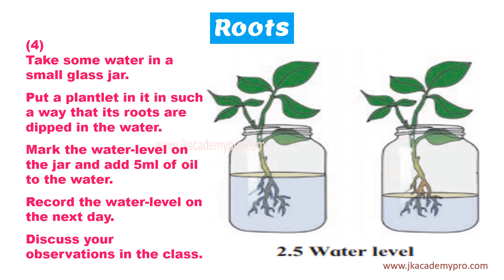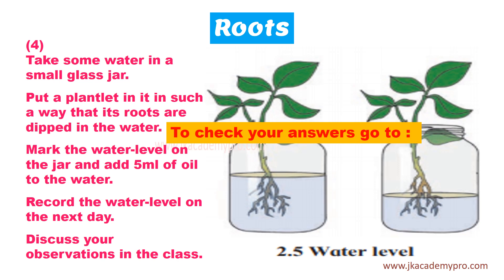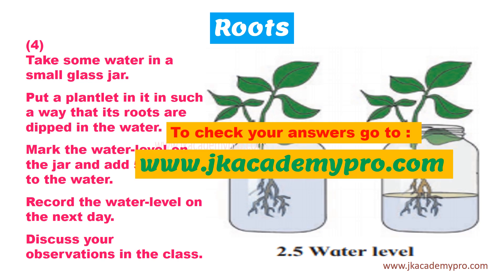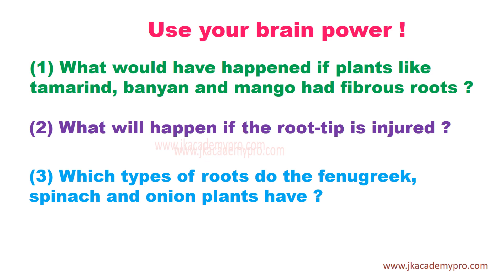Let's try another activity. Take some water in a glass jar and put a small plant — a sapling with prominent roots — so that only its roots are dipped in the water. Mark the water level on the outside of the jar, then add 5 ml of oil so it floats on top. Record the water level the next day and discuss your observations in class. To check your answer, visit our website at www.jkacademypro.com.